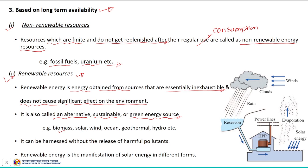Examples of renewable energy sources are biomass, solar, wind, ocean, geothermal, hydro, etc. These sources can be harnessed without the release of harmful pollutants, and because of that they are called green energy sources. Renewable energy is the manifestation of solar energy in different forms. For example, biomass is produced in nature through photosynthesis achieved by solar energy conversion, and wind is also an indirect source of solar energy conversion.